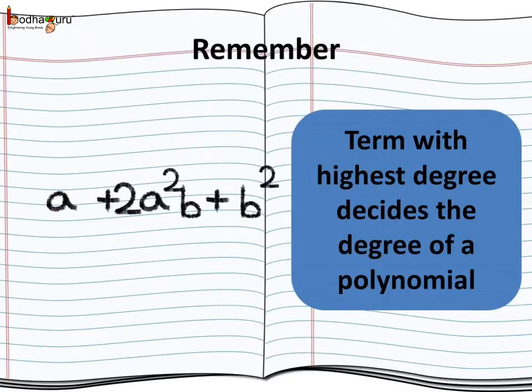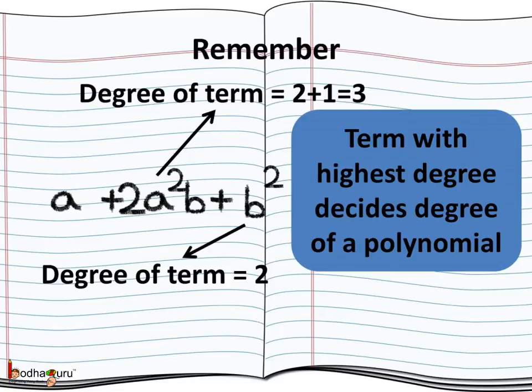So let's revise what we learned today. The term with the highest degree decides the degree of a polynomial. If a term has many variables, then we need to add the exponents of all the variables multiplied in a term to get the degree of the term.